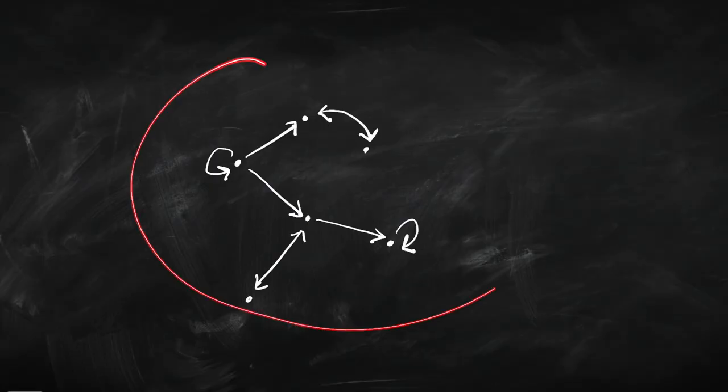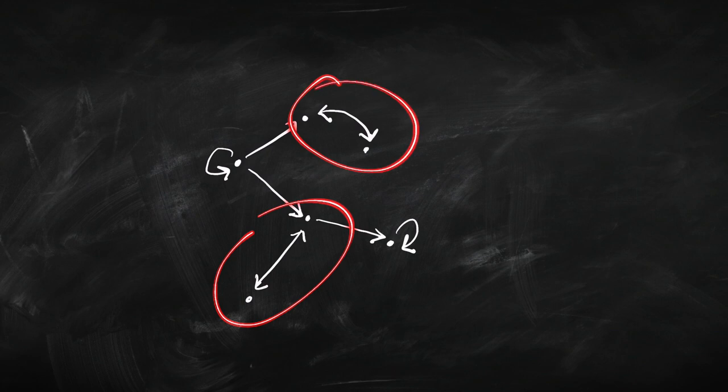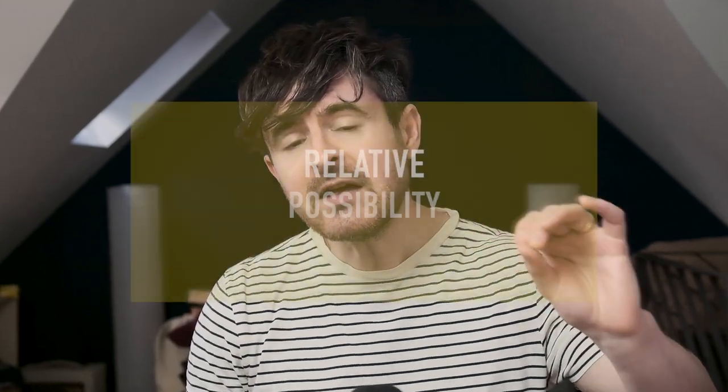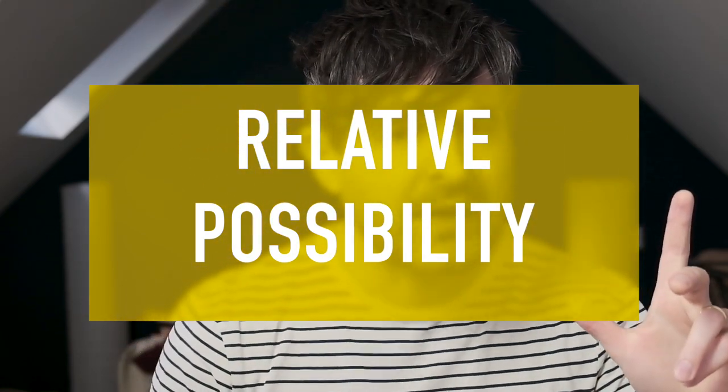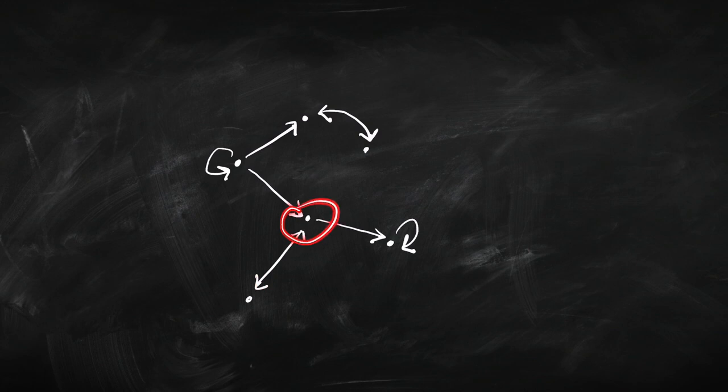So a quick recap. A relational structure looks like this: there are some blobs, which we think of as possible worlds — but we could just call them states or points or whatever. And we've got relations between them, an accessibility relation. You can think of it as relative possibility: this world is possible relative to that one, that one is possible relative to that one and relative to itself. Basically we're going to learn to do semantics for modal logic by following the arrows — either some arrows or all of the arrows.